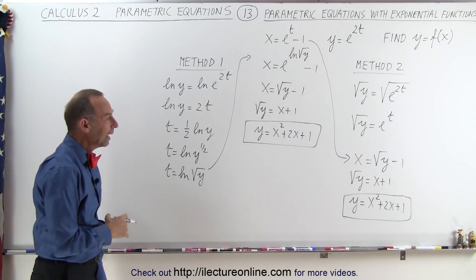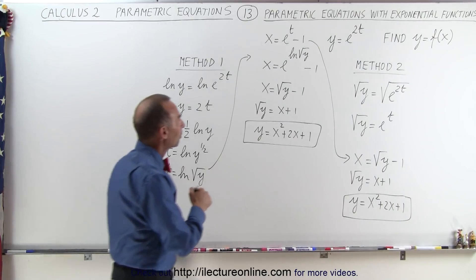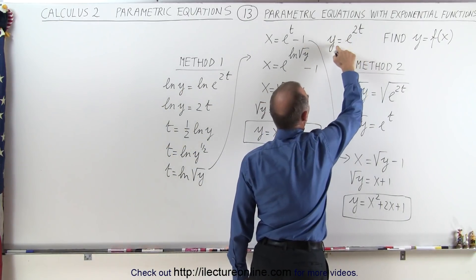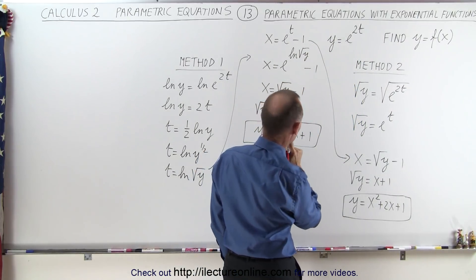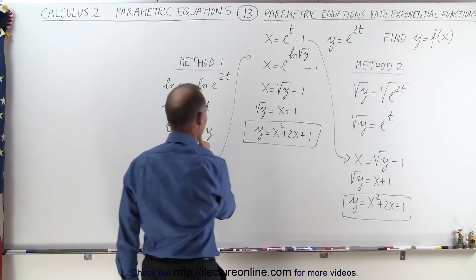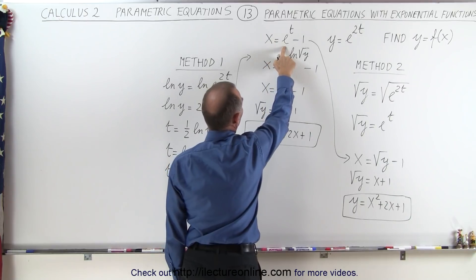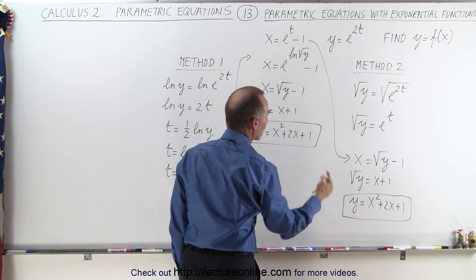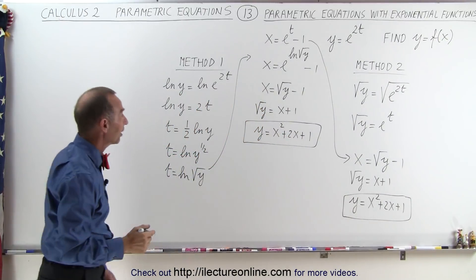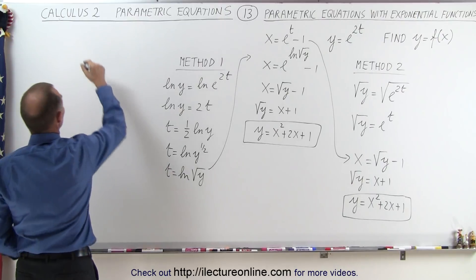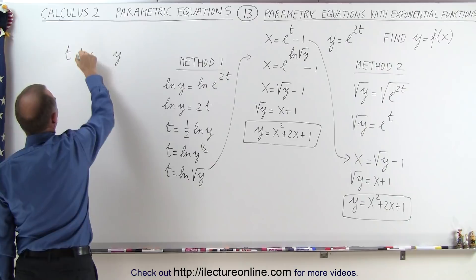Now let's compare things. What I'm going to do is plug in some values for t, get corresponding values for y, and relate t to x. We can find the values for x in terms of t and then plug those x values into y to see if we have the correct equation. Let's set up a table of values with t, x, and y.